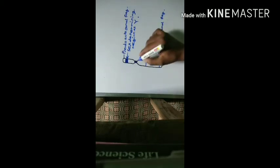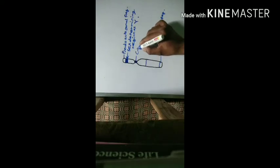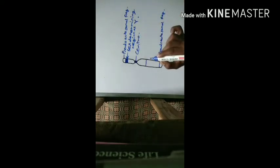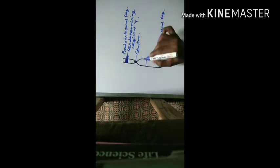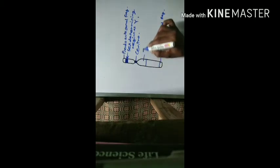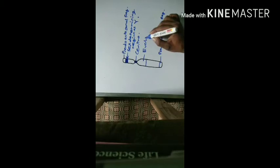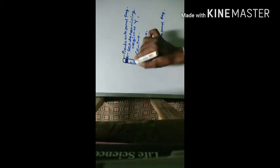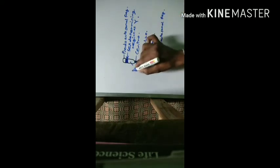This is the centromere, this is the euchromatin portion, this is the heterochromatin portion, and this is also the euchromatin portion.